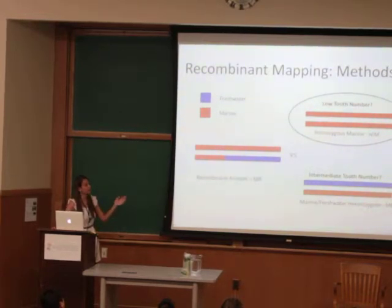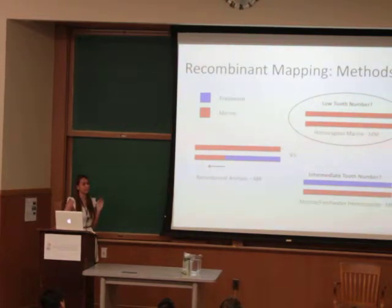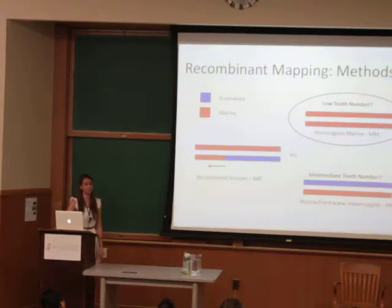Since the recombinant chromosome is acting like a marine chromosome, we would say that this result maps to the left, eliminating genes to the right of that recombinant breakpoint.